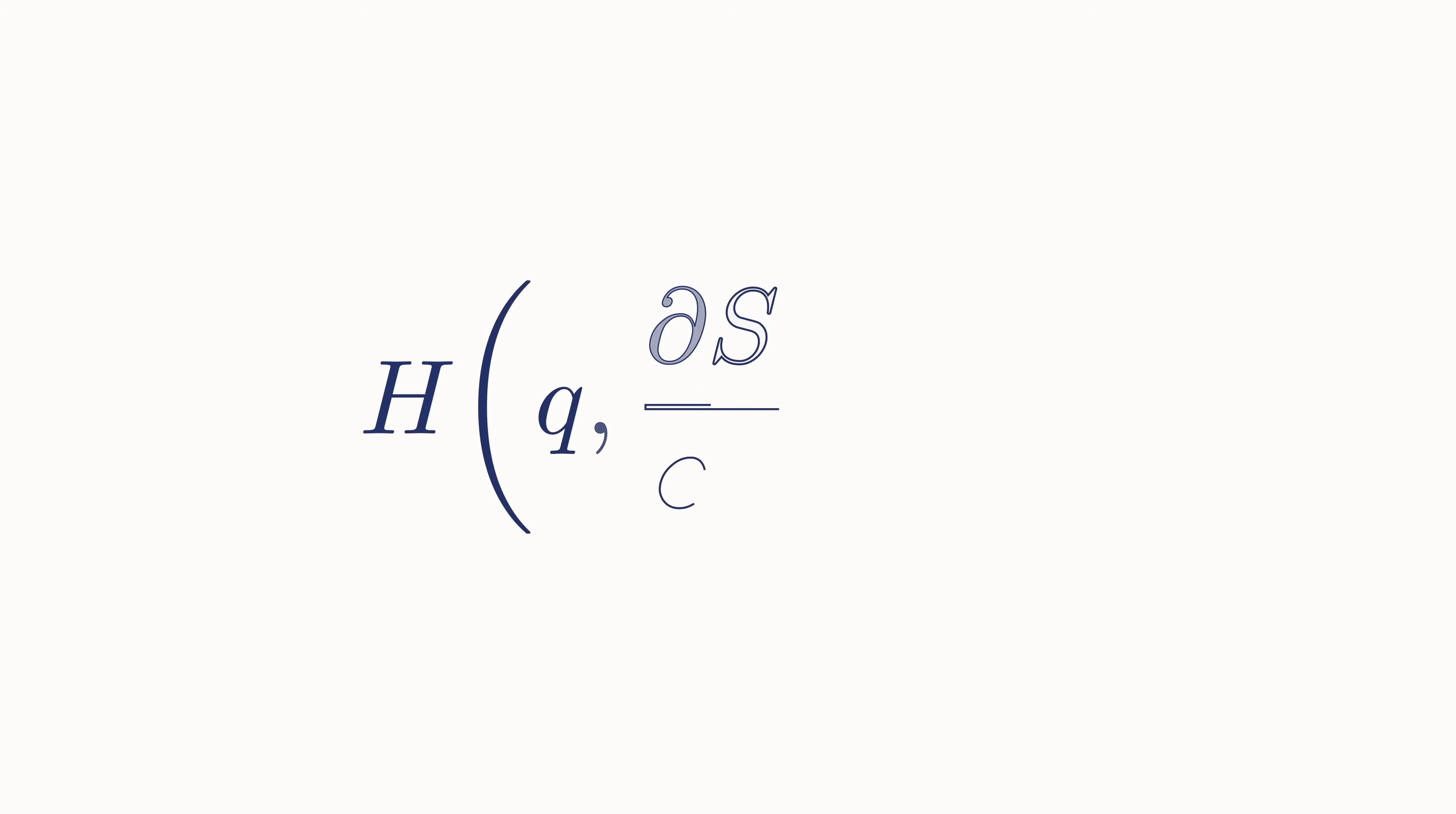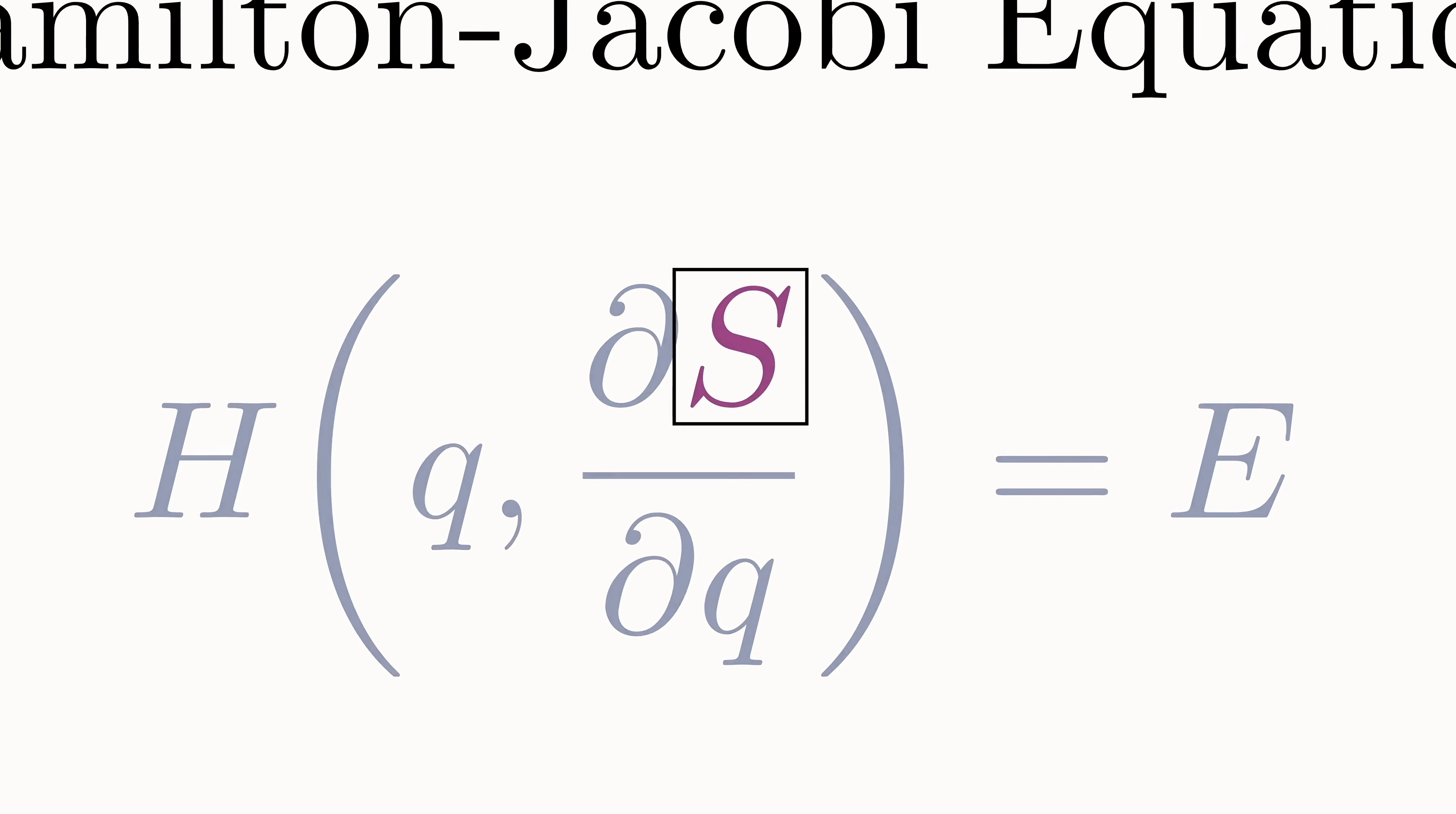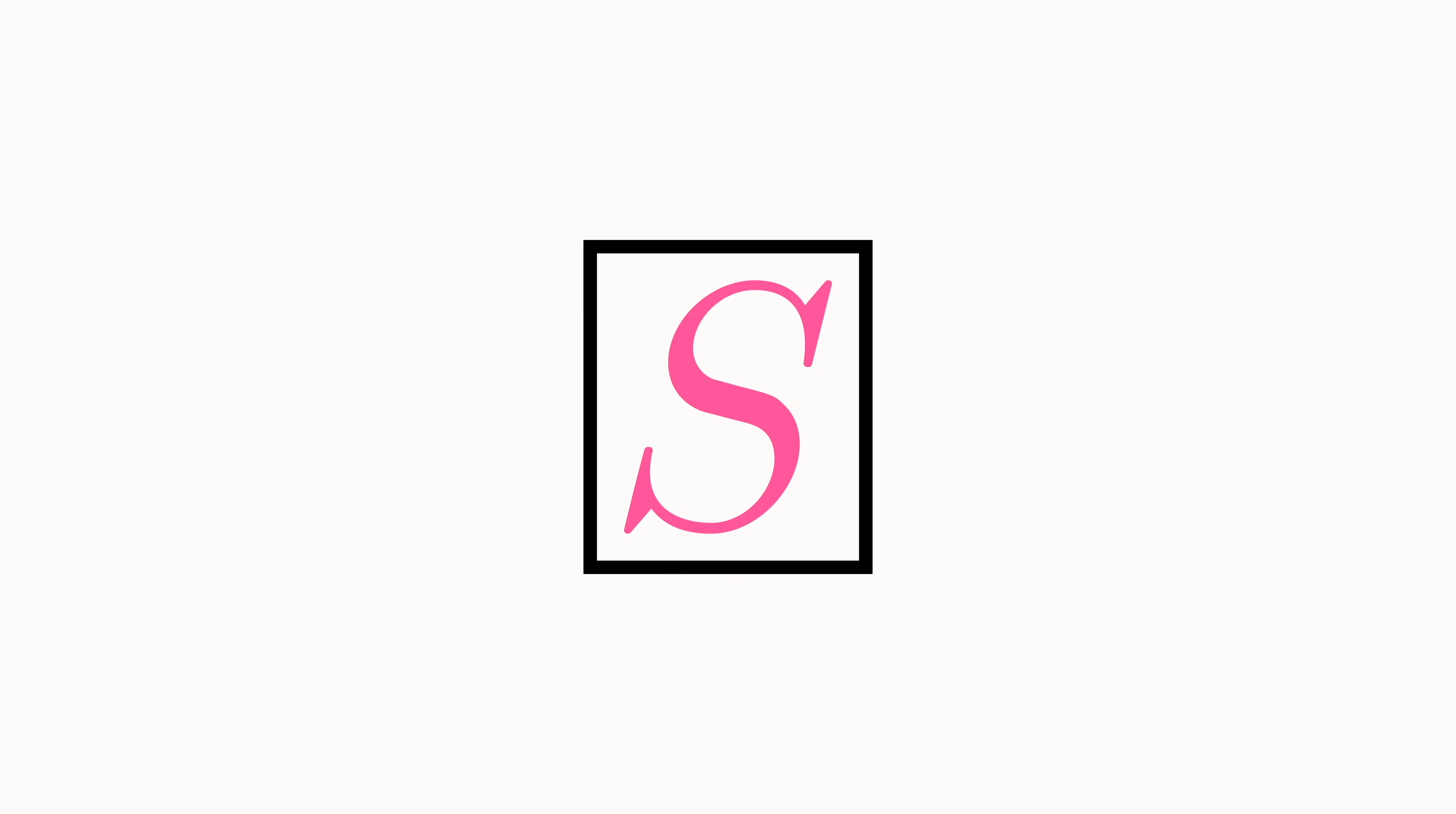Schrödinger begins this groundbreaking paper with an equation known as the Hamilton-Jacobi equation. Although it might look intimidating, I assure you there is an intuitive visual way to understand it. And the path we'll take to get there is to focus on this term, the action. To truly understand the role that action played for Schrödinger, we'll need to take a brief tour of its history.